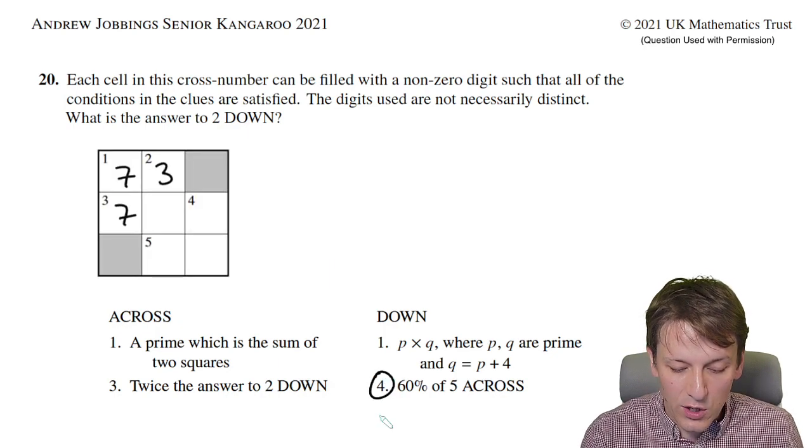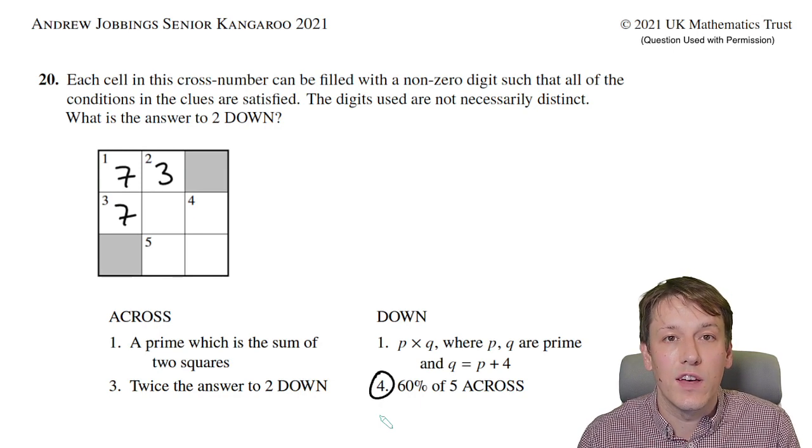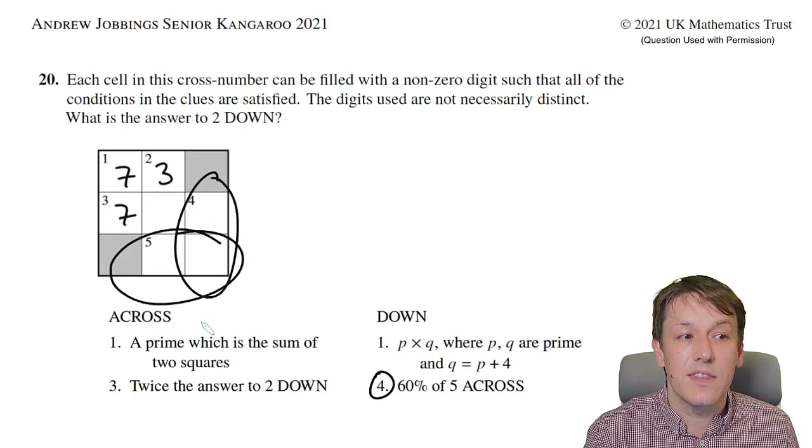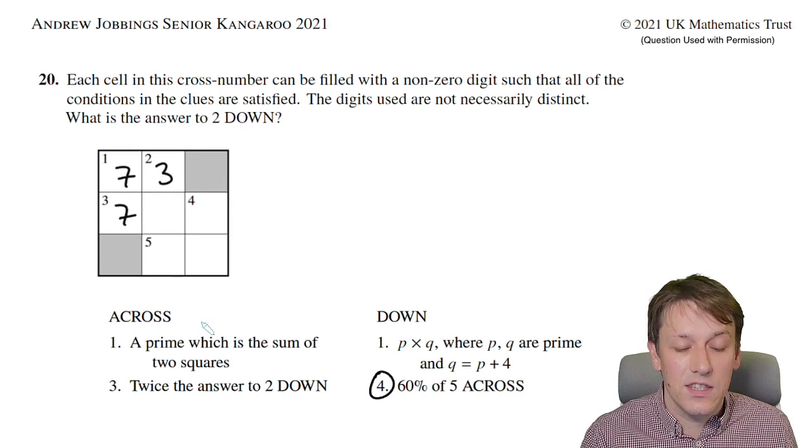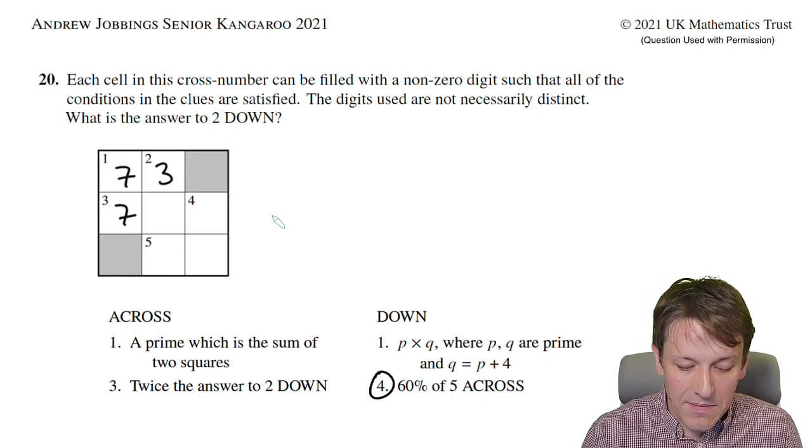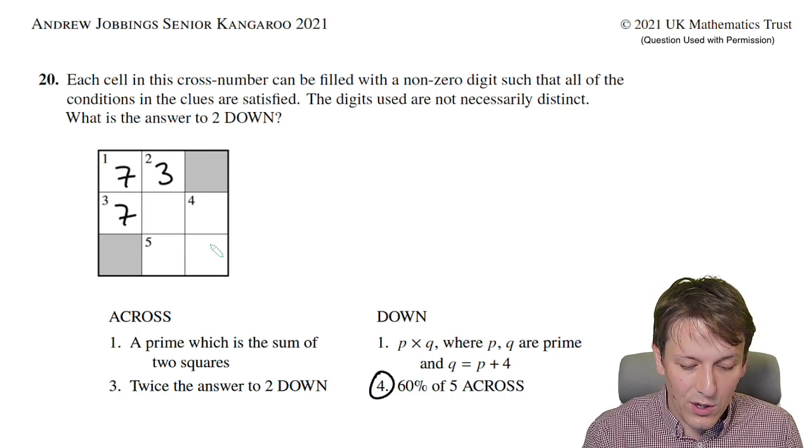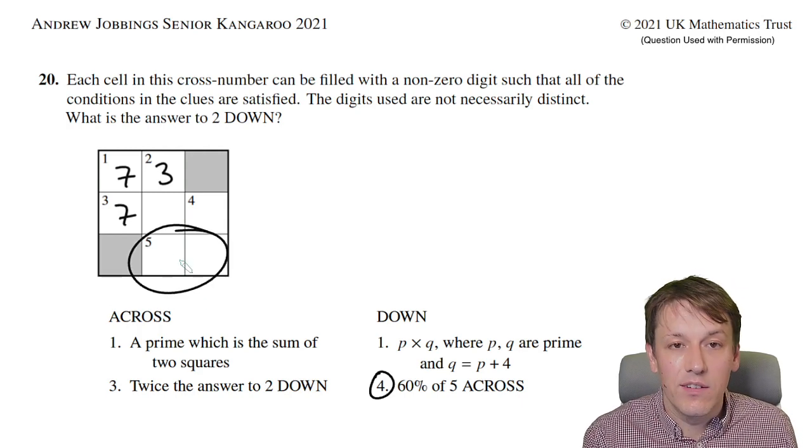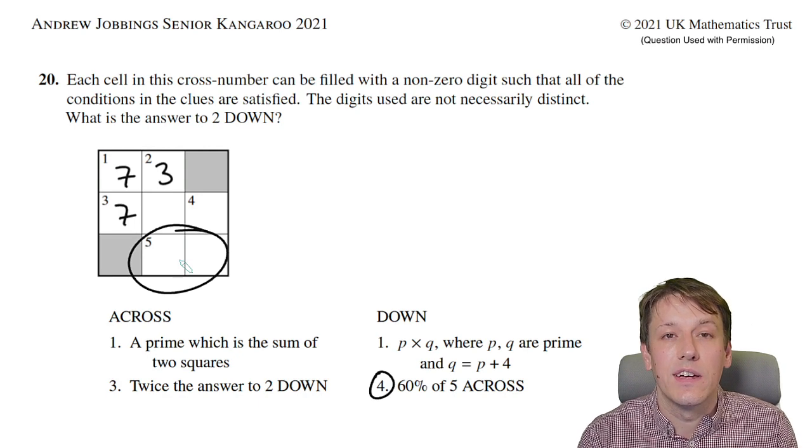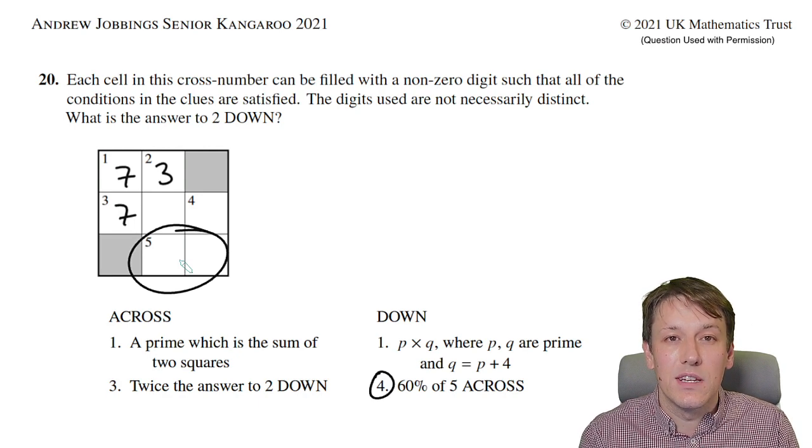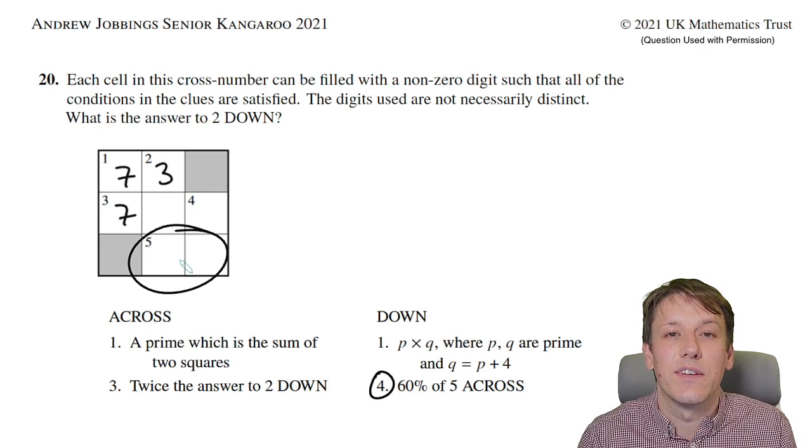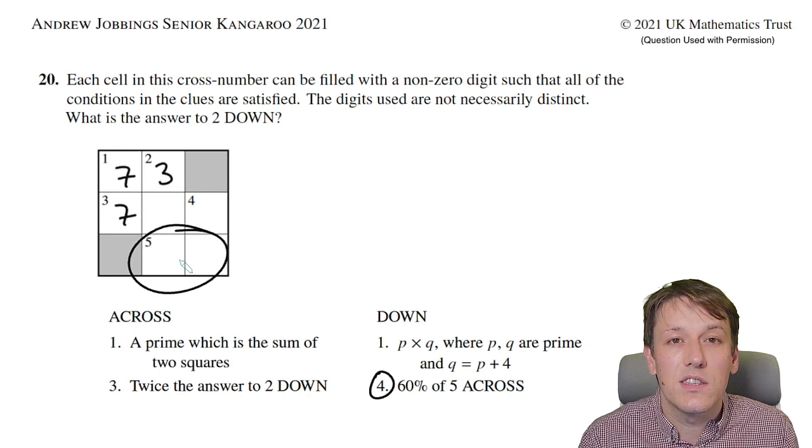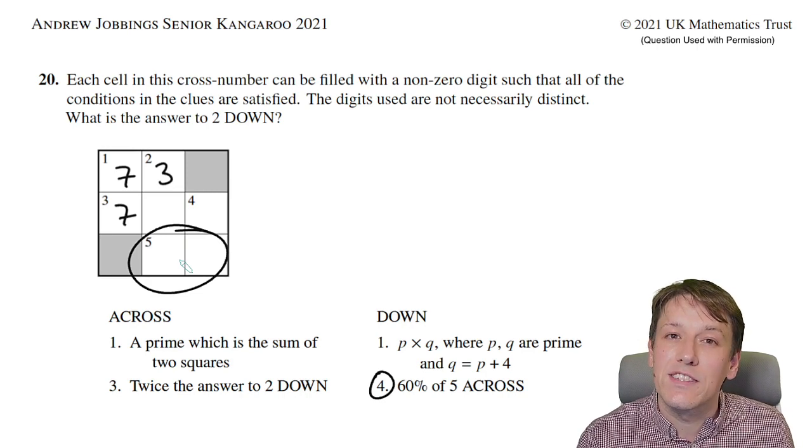We haven't looked at this clue yet: four down is 60 percent of five across. 60 percent is three-fifths, so I must be able to find three-fifths of five across and get a whole number. The only way that can be true is if five across is a multiple of five. Multiples of five can only end in zero or five, but we know no digits are zero, so this bottom right cell has to be a five.